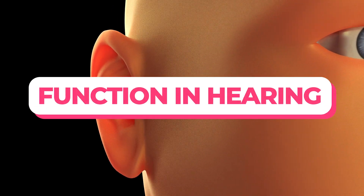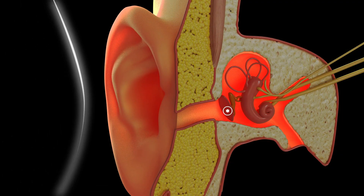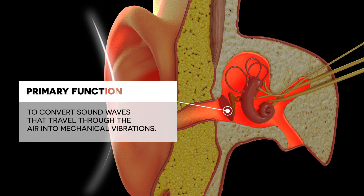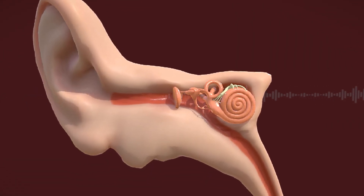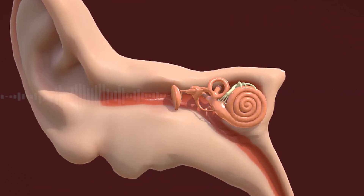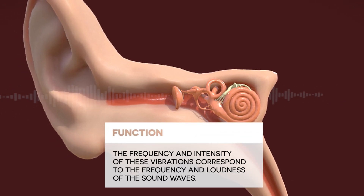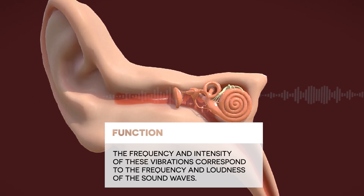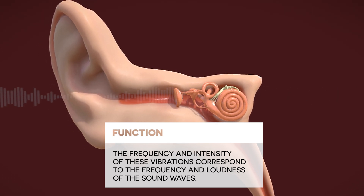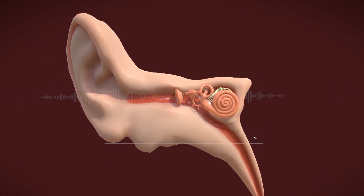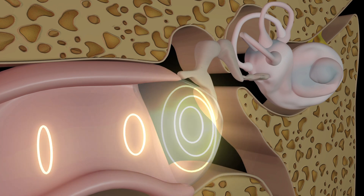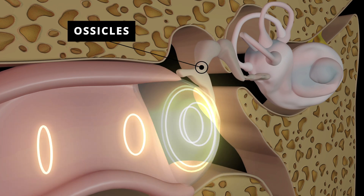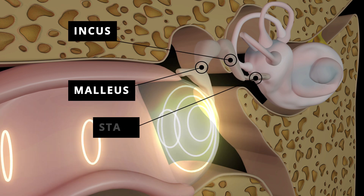The primary function of the eardrum is to convert sound waves traveling through the air into mechanical vibrations. When sound waves enter the ear canal, they strike the eardrum and cause it to vibrate. The frequency and intensity of these vibrations correspond to the frequency and loudness of the sound waves. These vibrations are then transmitted to the three ossicles — the malleus, incus, and stapes — in the middle ear.